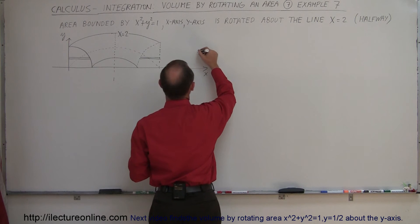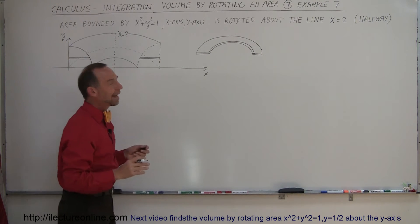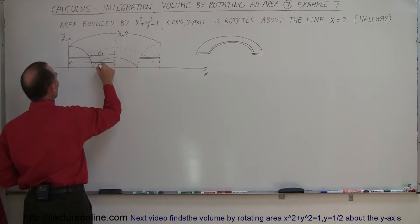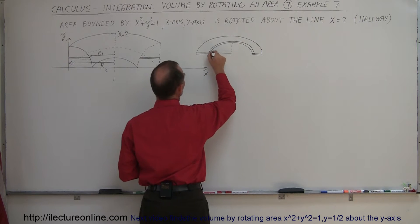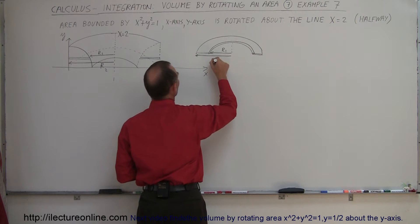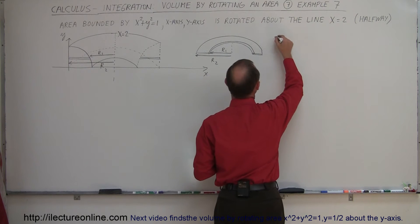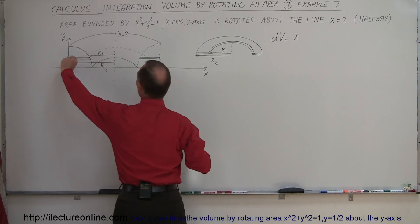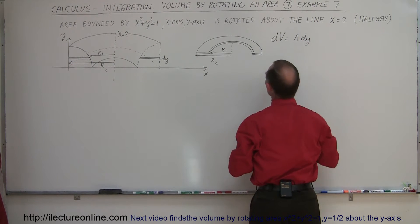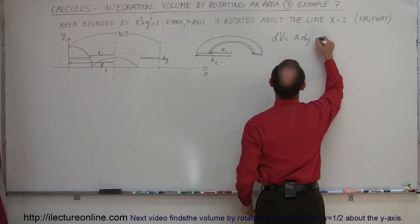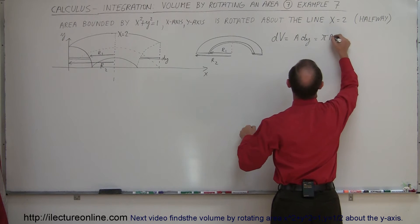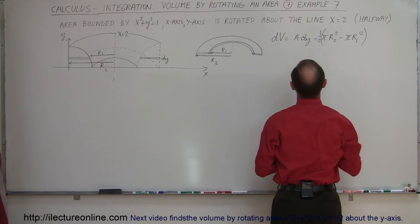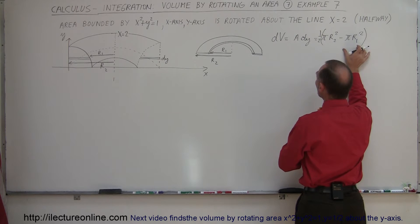So let me draw the washer — it's going to be a half washer. Notice the inner radius from there to there is R1, and the outer radius from there to there is R2. The volume DV equals the area of the washer times the thickness. The thickness is in the y direction, so it's dy. The surface area is the whole disk minus the hole: pi times R2 squared minus pi times R1 squared. Since we're only doing half, we multiply by one half. So DV equals one half times pi times (R2 squared minus R1 squared) times dy.